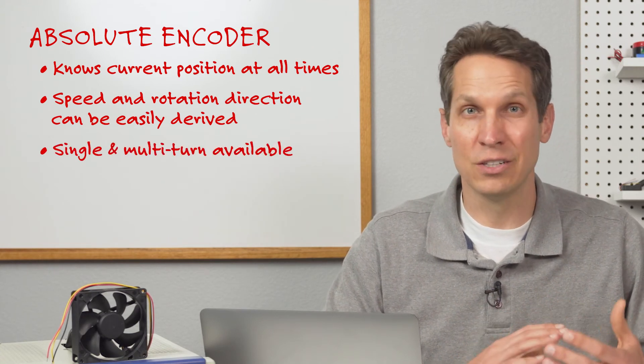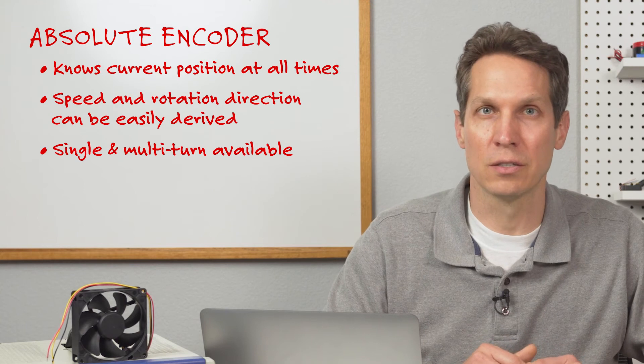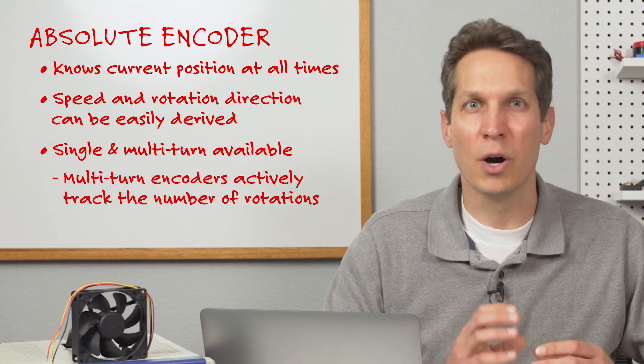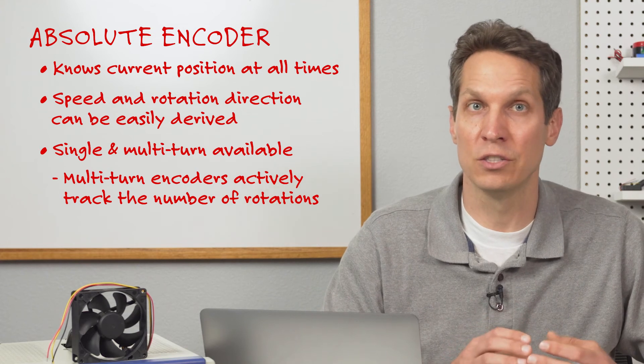Interestingly enough, there are both single and multi-turn absolute encoders. Multi-turn encoders not only give the absolute position of the motor shaft, but also actively track the number of rotations the motor has made.